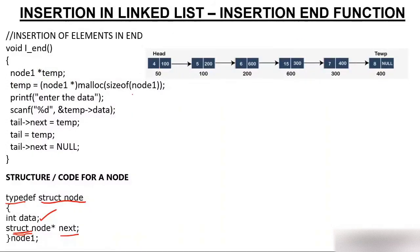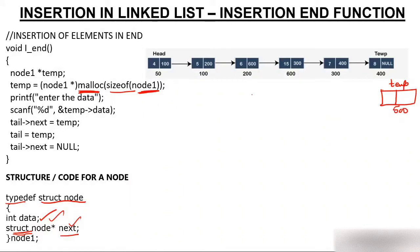Since we have to insert a node at the end, we use the malloc function to create a new node. Malloc will create a node of size node1, which has a data part and an address part. Suppose the address of this new node is 500. Now we have created the node — next we enter the data. Suppose you enter 9, so temp->data will have the value 9.